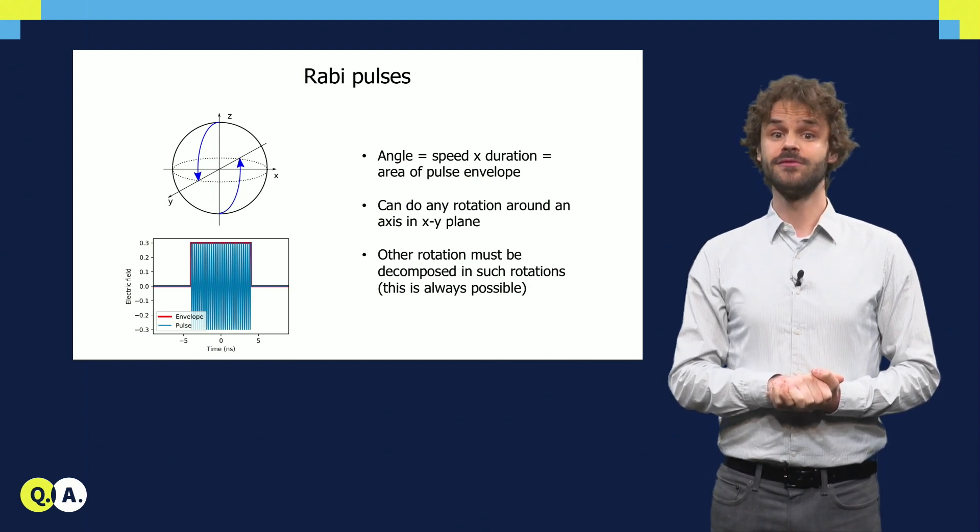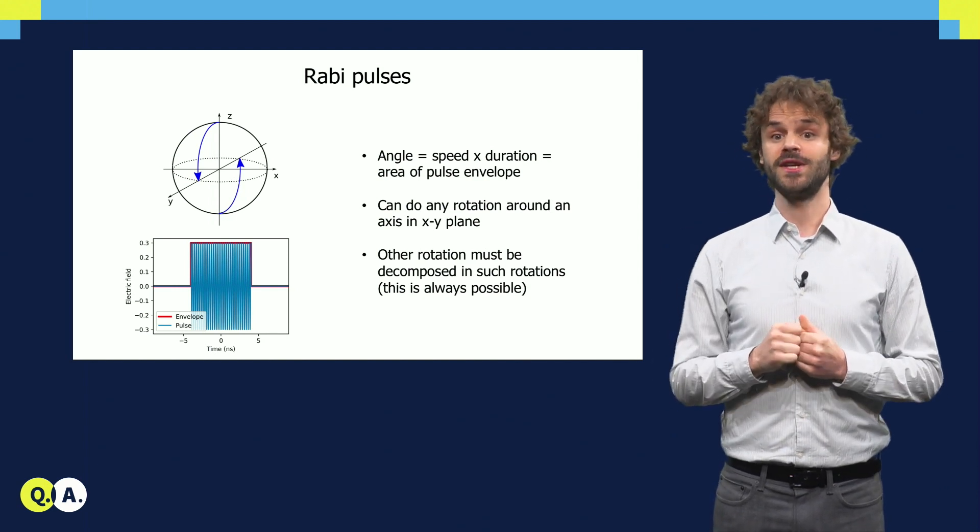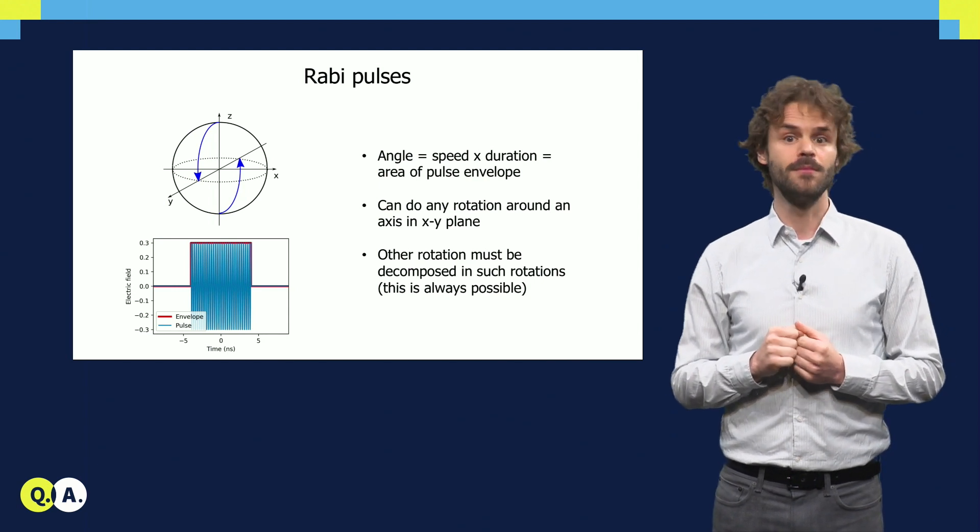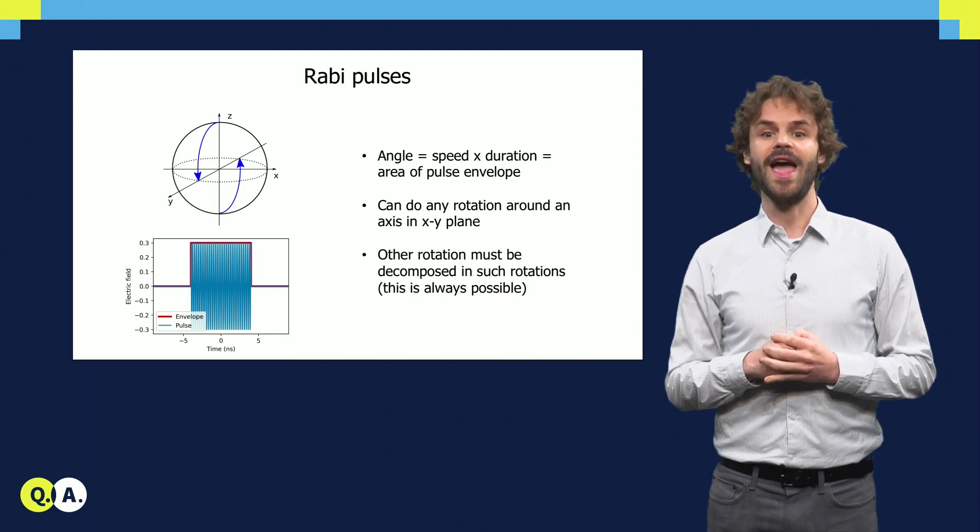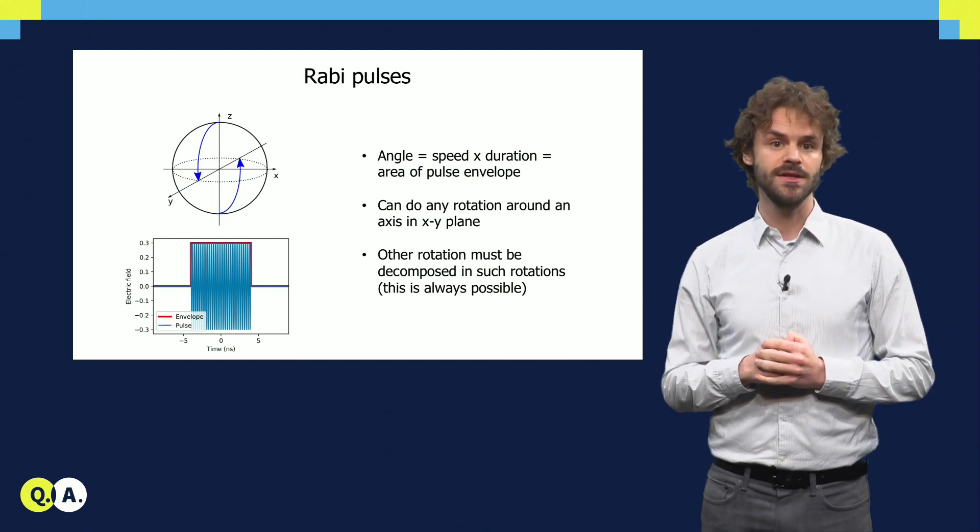This way, we can perform any rotation with the axis in the xy-plane. If we want to rotate around another axis which does not lie in the xy-plane, we have to decompose it. It turns out that any single qubit gate can be performed using no more than three microwave pulses in sequence.